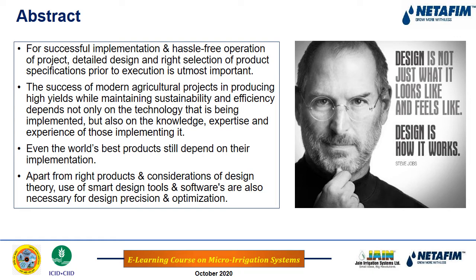For the success of any project, detailed design and selection of the right products is very important. An irrigation project is no exception. Correct design eases implementation and minimizes future problems during operation and maintenance. Design is not about how it looks — design is about how it works. For successful implementation and hassle-free operation, right product selection and detailed design are critical. Success in modern agricultural projects depends not only on the technology implemented, but also on the knowledge, expertise, and experience of the people implementing it. Advanced tools and software are also very important.